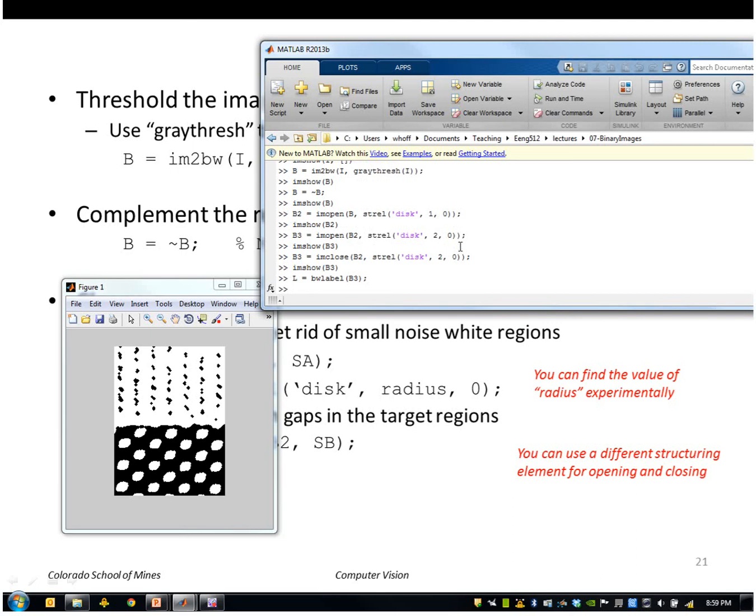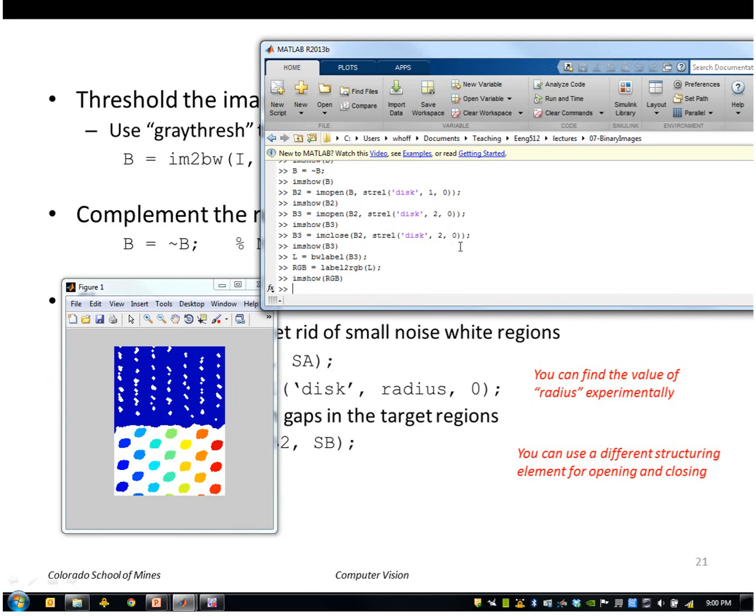And then I could stop there or I could apply false coloring to see those labels more clearly. So as you can see I've got unique labels for all of those points.